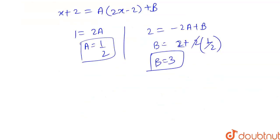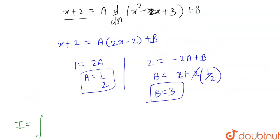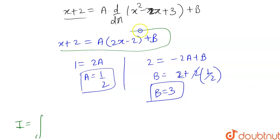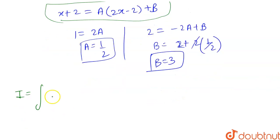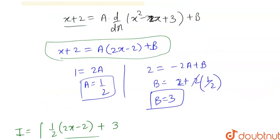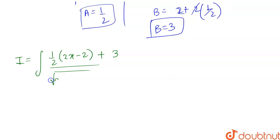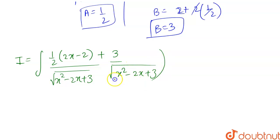So here I can write our integral i equal to the integration where x plus 2 is rewritten in this form. So we write x plus 2 as (1/2)(2x minus 2) plus 3, and in the denominator we have the square root of (x squared minus 2x plus 3) dx.